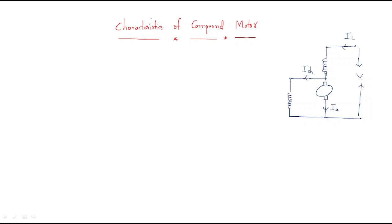Hello everyone. In this session we will discuss the characteristics of the compound motor. We already discussed the characteristics of DC series motor and DC shunt motor, and now it is for the compound motor. A compound motor is simply a combination of shunt and series field winding. We will briefly recollect all those points.